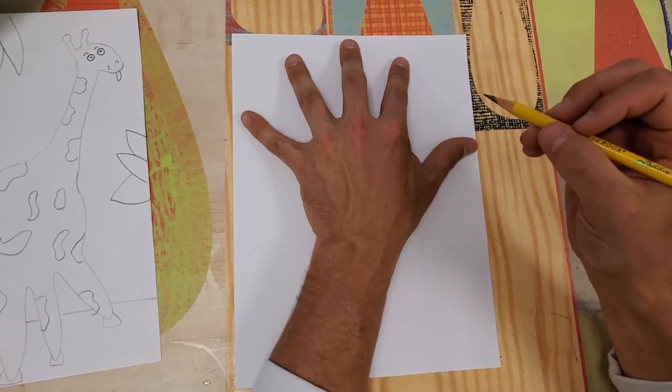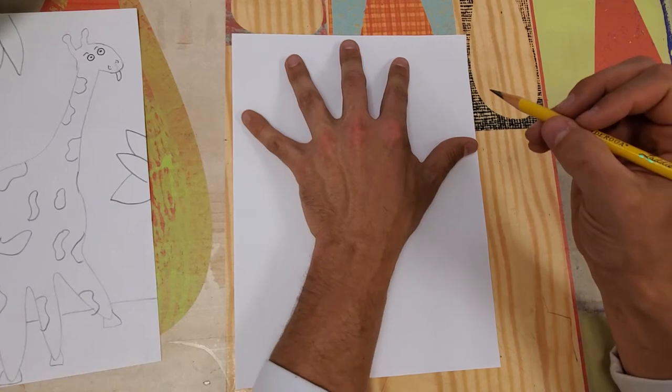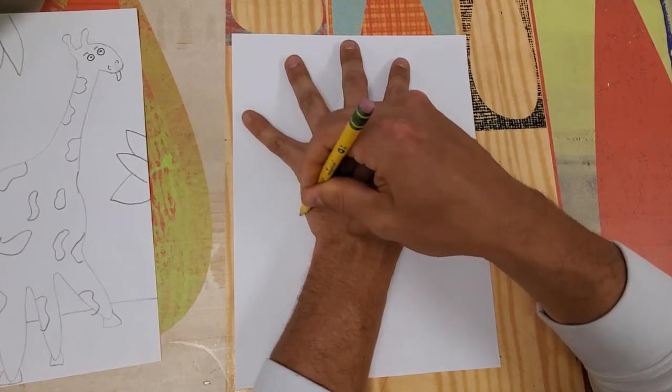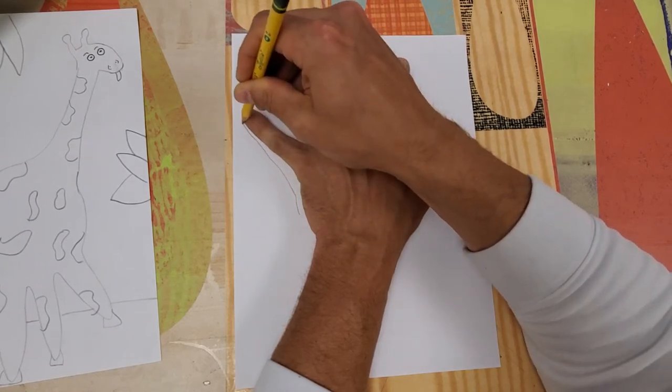You see I've got my other hand waiting with a pencil here. That's important. The hand on the paper should be the hand that you do not draw with. I'm going to come over to this side of my hand first.